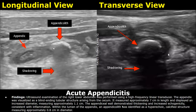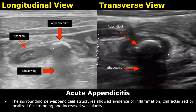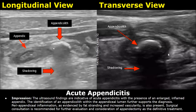After that, you can comment on the appendiceal wall. If an appendicolith is visualized, you can write that within the lumen of the appendix, an appendicolith was identified as a hyperechoic calcified structure, and then note its size. Next, you can write about peri-appendiceal structures. In the end, surgical consultation is recommended for further evaluation and treatment.